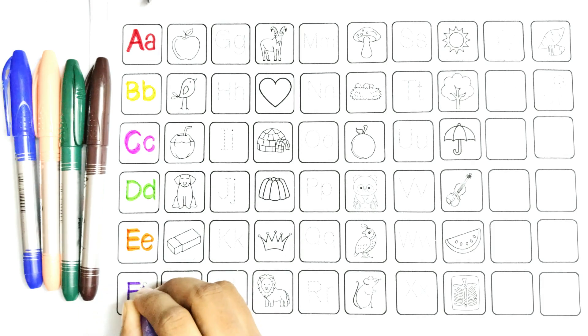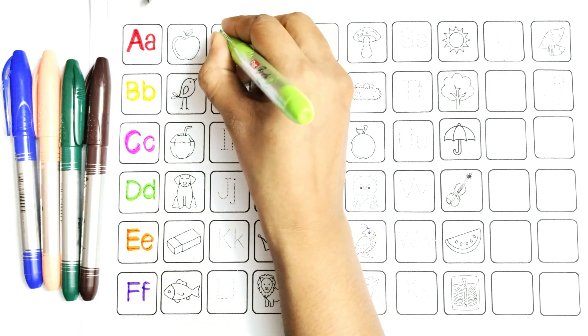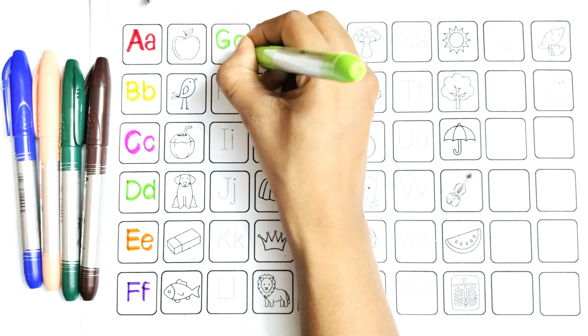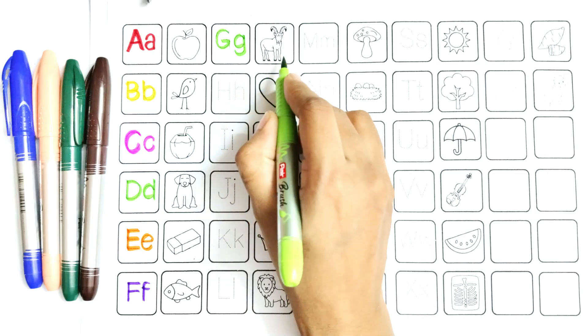F, say with me: F, F is for fish. G, say with me: G, G is for goat.